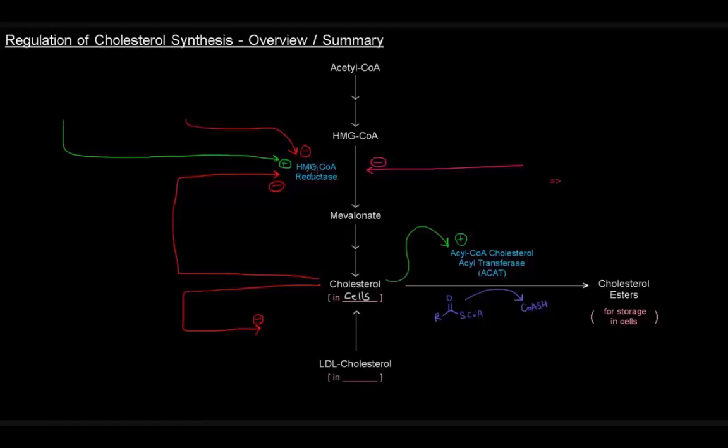We mentioned already that HMG-CoA reductase is the main control site or control point of this process. It is activated by insulin, because it's anabolic, and it's inhibited by glucagon - anabolic versus catabolic hormones. HMG-CoA reductase is anabolic in that it makes this lipid, so insulin would trigger it and glucagon would inhibit it.